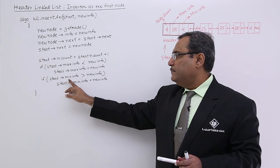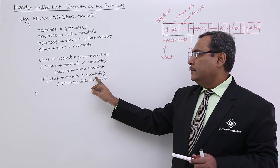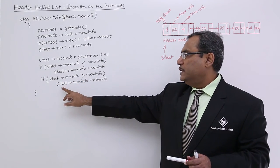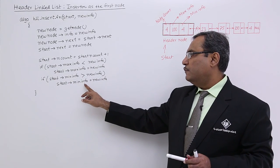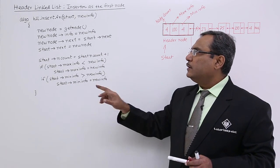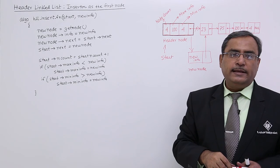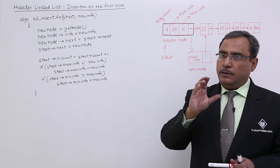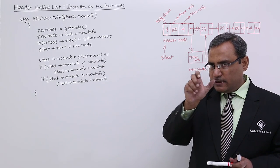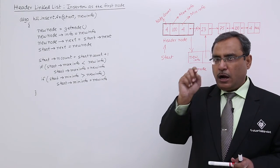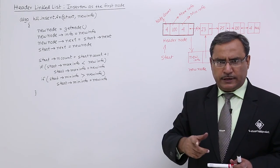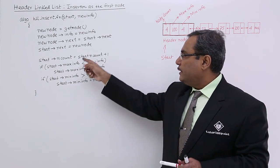Similarly, if start implies min info is greater than this new info, that means start implies min info equals new info. So in this way we can easily update our max fields, that means the header fields max, min, count, average, any other fields so that they will get updated accordingly.